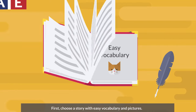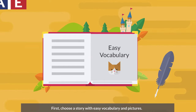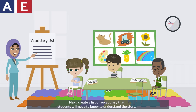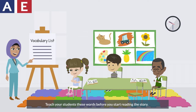First, choose a story with easy vocabulary and pictures. Next, create a list of vocabulary that students will need to know to understand the story. Teach your students these words before you start reading the story.